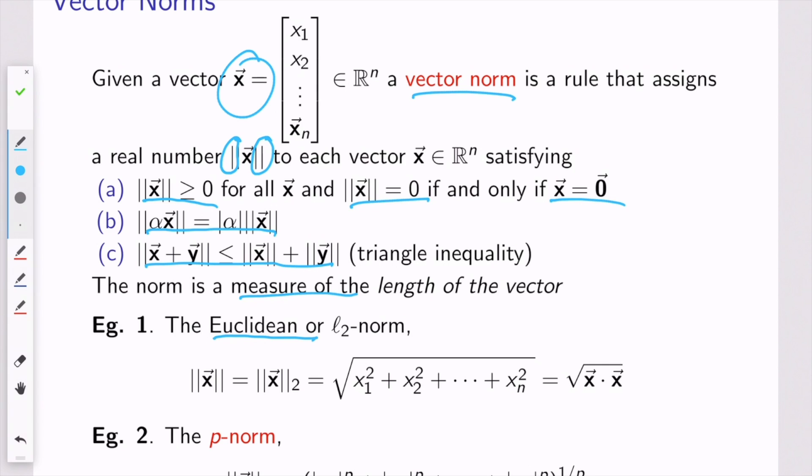All that means is that if you want to know the norm of the vector, you take all the elements, you square them, add them up, and take the square root.